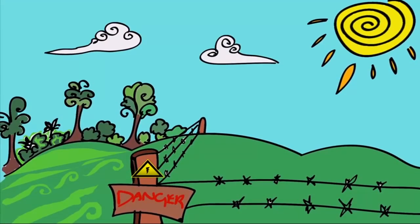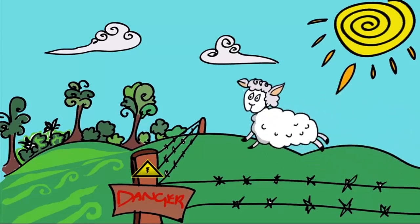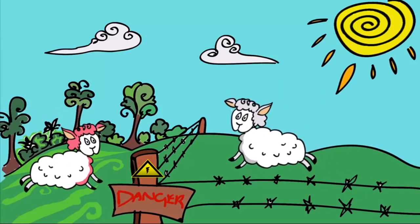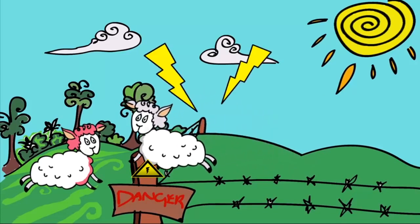You can also condition animals not to behave in a certain way. For example, sheep can be conditioned to stay in a field by using an electric fence. The sheep learn that if they touch the fence they get an unpleasant shock, so they are conditioned to stay away from it.